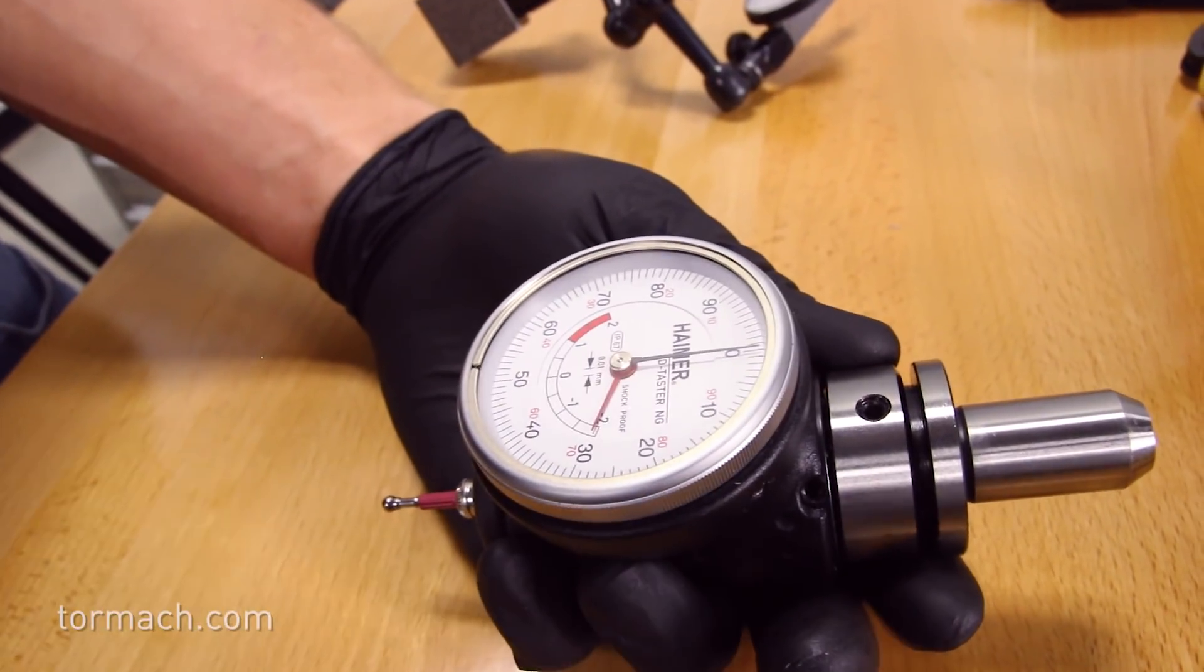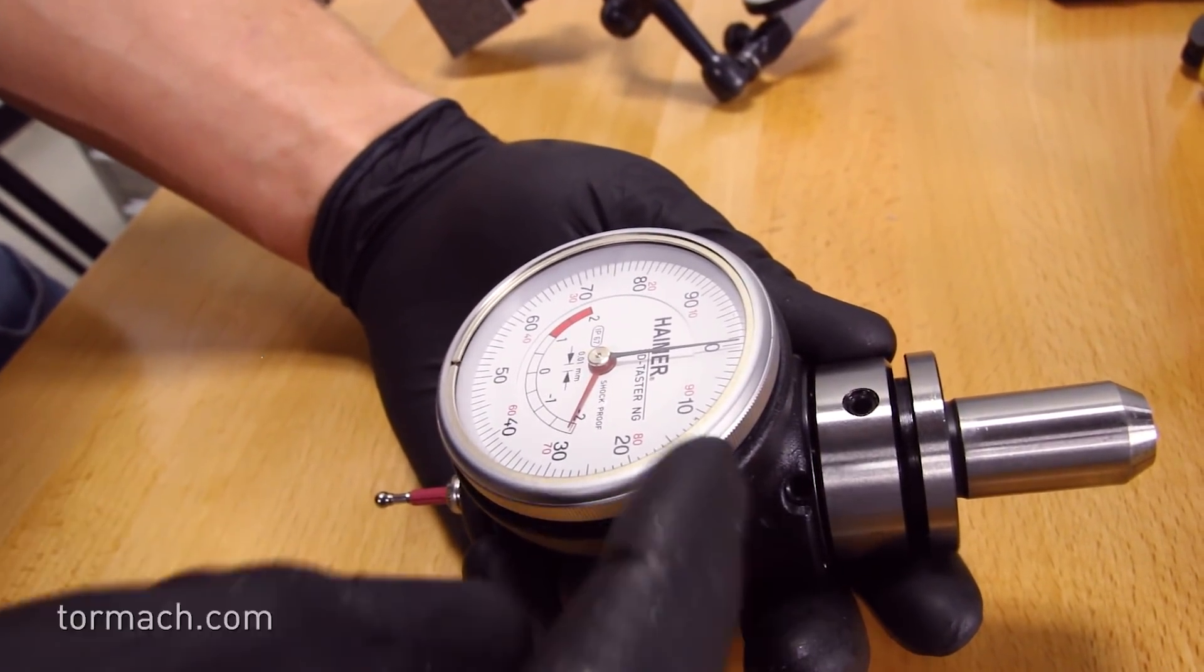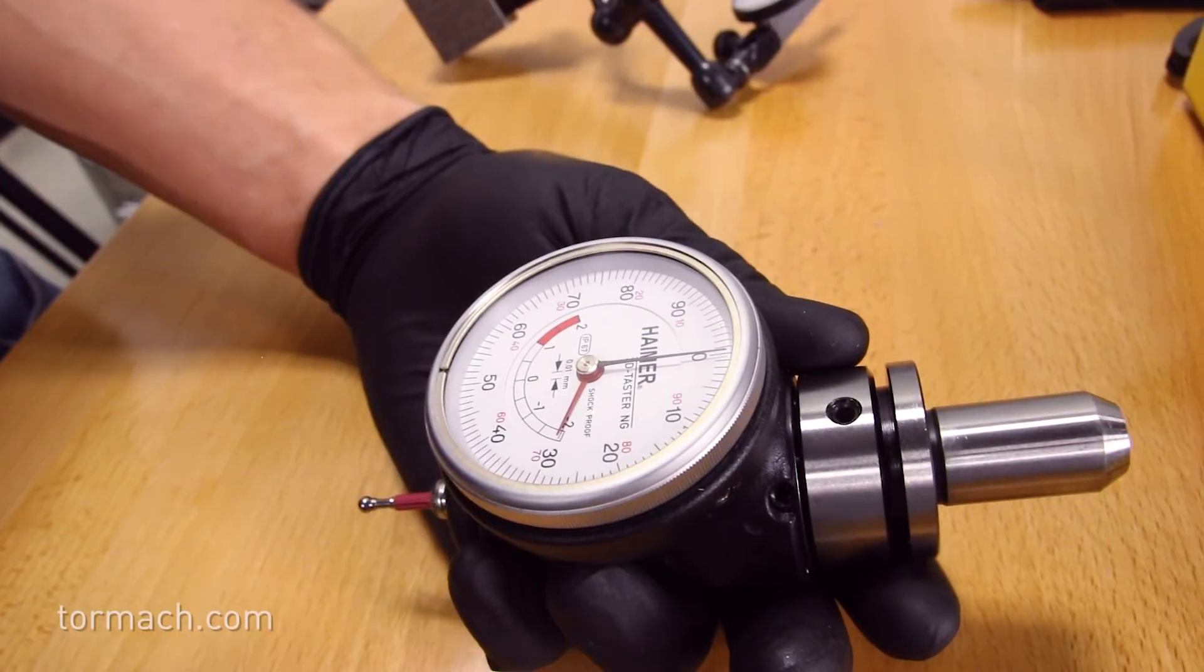So everything should be calibrated. We've installed the holder, we set the run out, and we've set our dial at zero. I hope you guys enjoyed that video and find it useful on how to calibrate your Hymer. Please watch our other YouTube videos and subscribe to our YouTube channel.